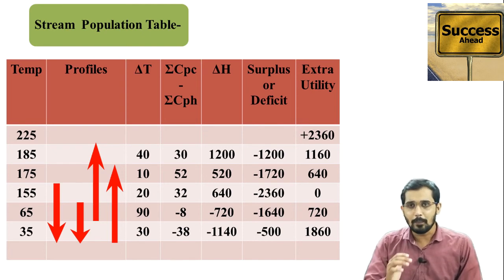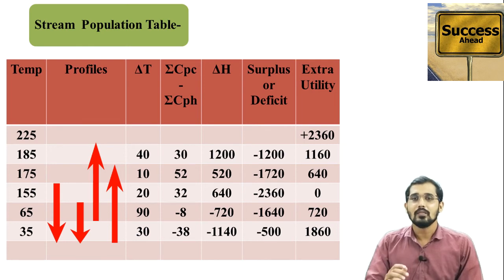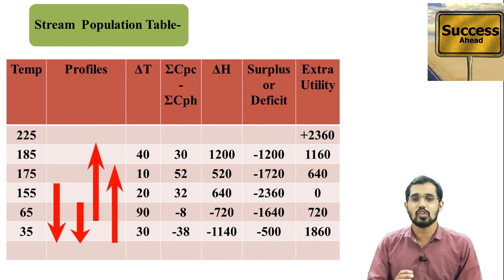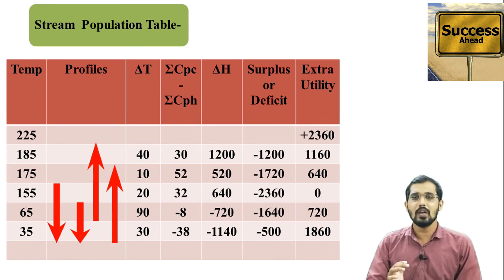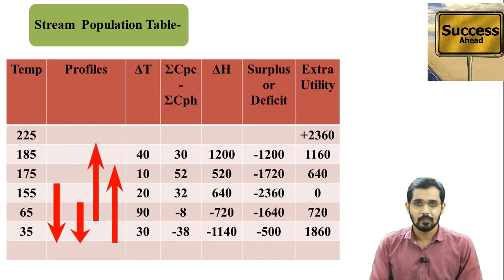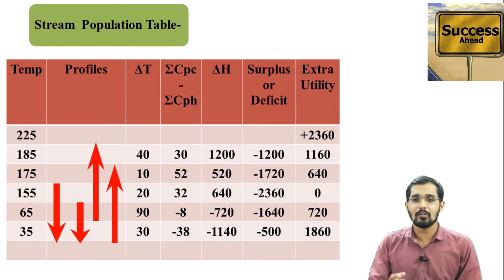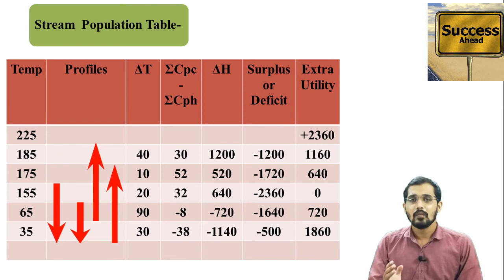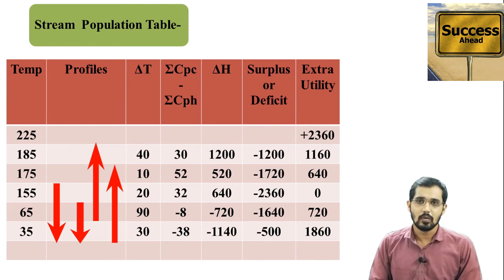After that, apply the rule for ΣCpc − ΣCph to calculate the heat flow rate values for the fourth column. Then calculate the ΔH value, which is sensible heat given by MCpΔT. Here MCp is ΣCpc − ΣCph, and ΔT is the value calculated in the third column. Multiply the fourth column by the third column to get the ΔH value. Calculate this ΔH for all shifted temperature intervals.